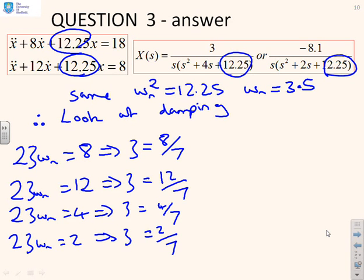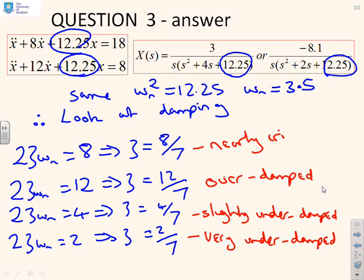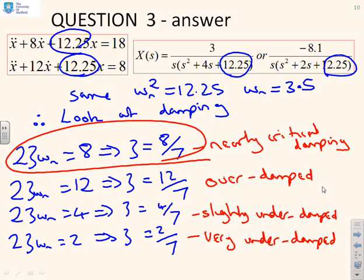Now, what can we say? We were looking at speed of response, and we wanted to know which one was fastest. So this one is very underdamped. This one's slightly underdamped. This one's overdamped. And this one is nearly critical damping. You remember, critical damping has a ζ of 1. So the fastest is going to be this one here.